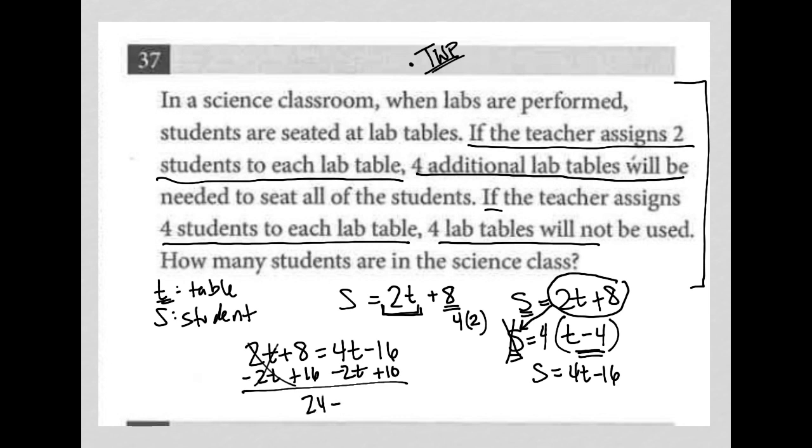Four T minus two T is equal to two T. The 16s are gone. I divide both sides by two. And I get T is equal to 12. Now, the question asks, how many students are in the science class? Not how many tables.